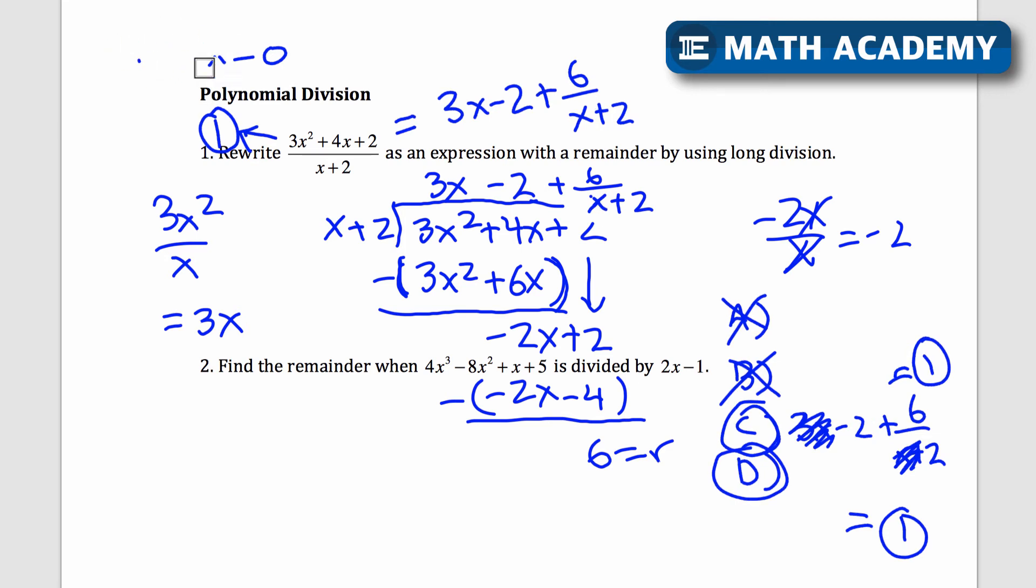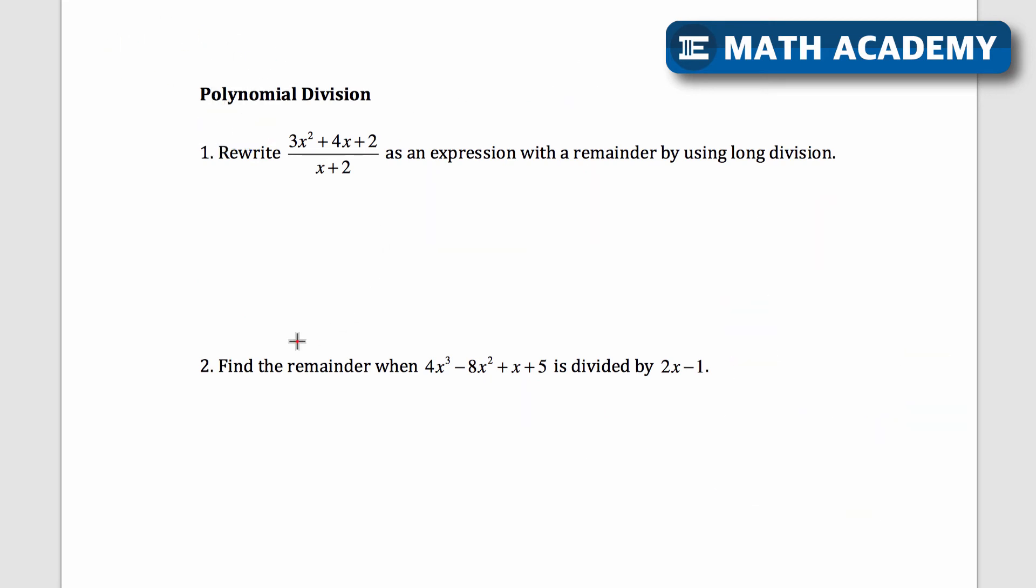Let's go on to the next problem. Problem 2 says find the remainder when 4x cubed minus 8x squared plus x plus 5 is divided by 2x minus 1. Let's do that long division process. I'll go all the way up here. So 4x cubed minus 8x squared plus x plus 5 is divided by 2x minus 1. This problem is just asking for the remainder. I want to keep that in mind.